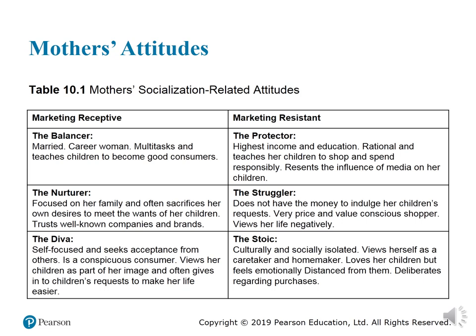The diva is self-focused and seeks acceptance from others. She is a trend-maker consumer who uses her children as part of her image and often gives in to children's requests to make her life easier. These three types explain market receptors. For market resistance, there are another three types: protector, struggler, and stoic.